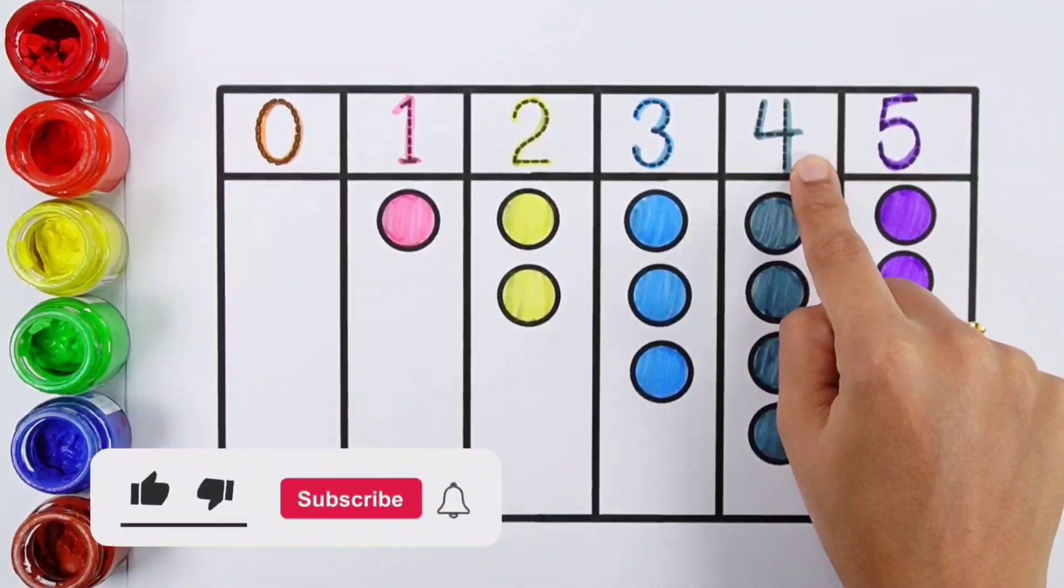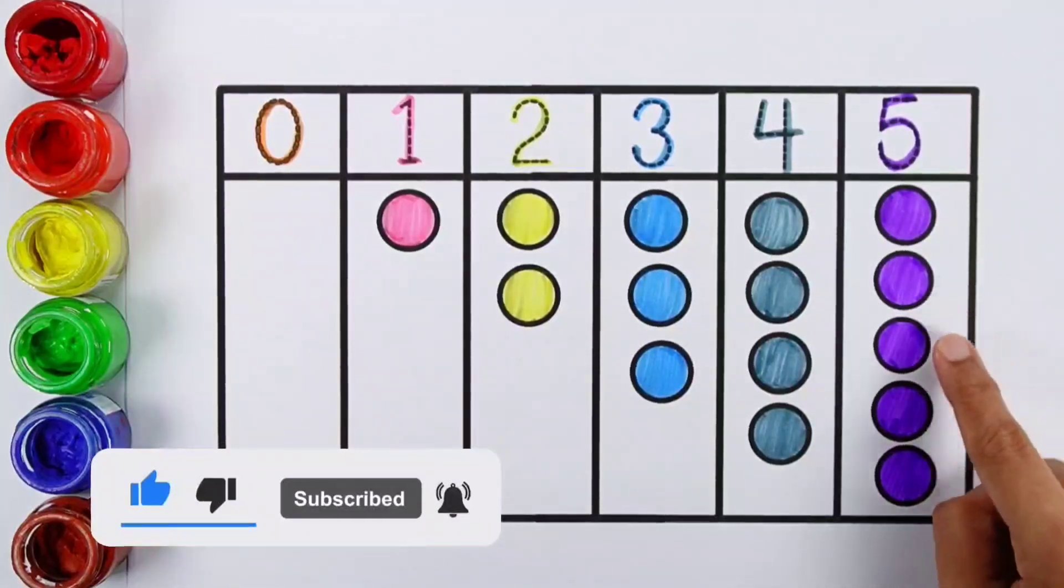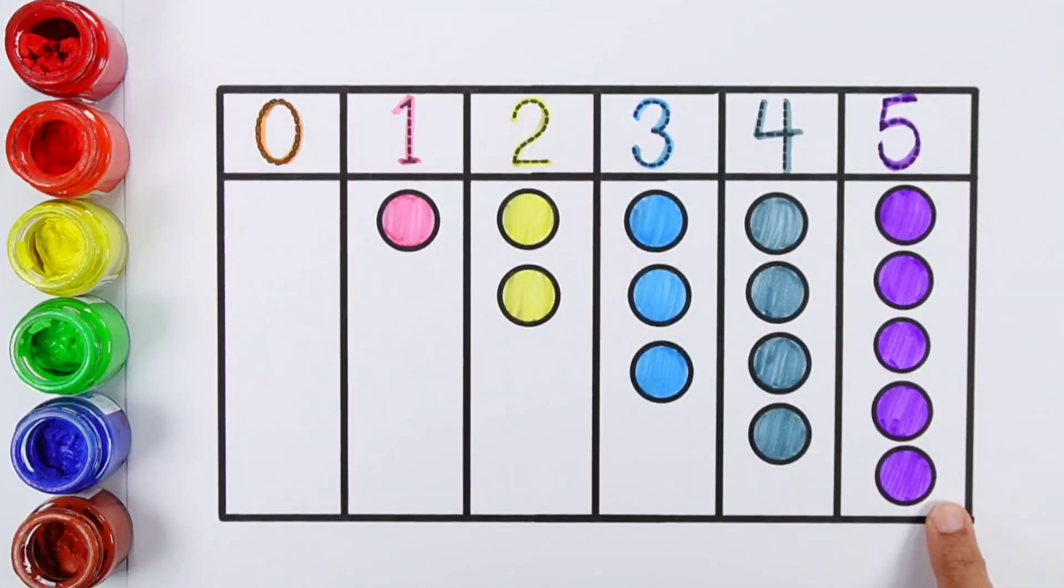Zero, zero balls. One, one ball. Two, two balls. Three, three balls. Four, four balls. Five. One, two, three, four, five. Five balls.